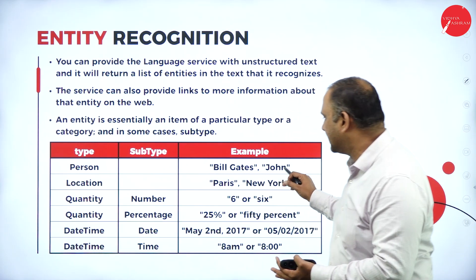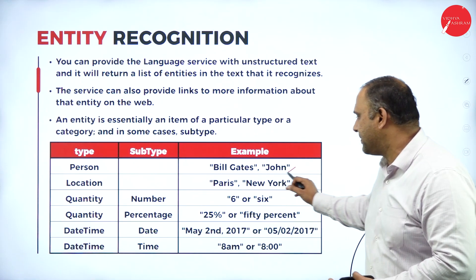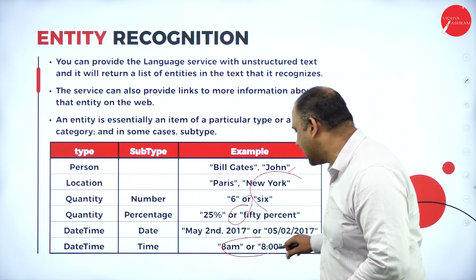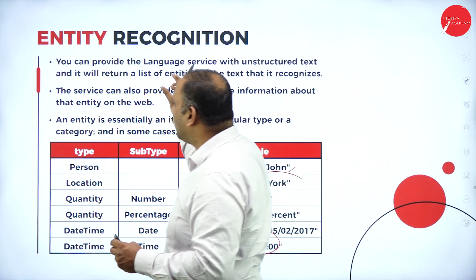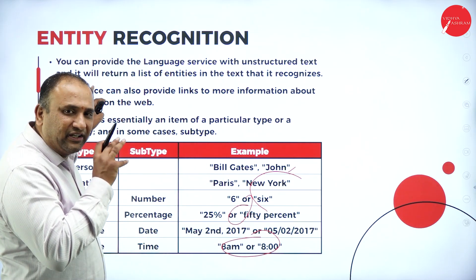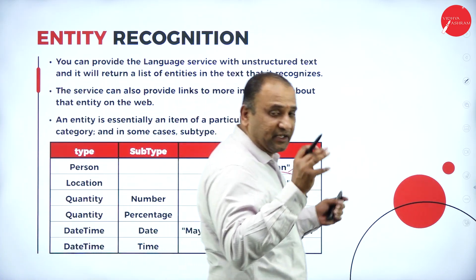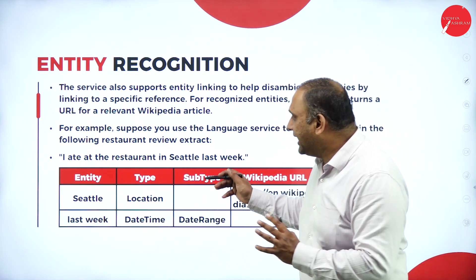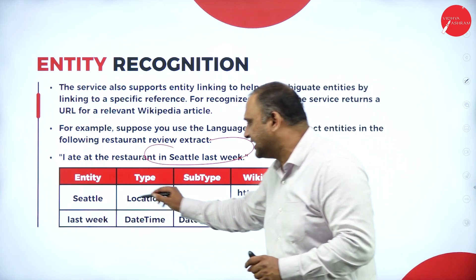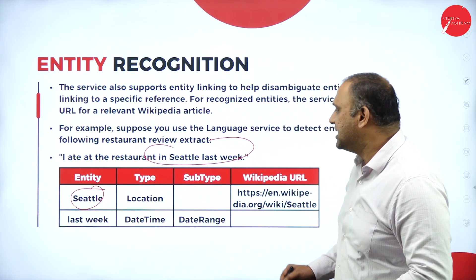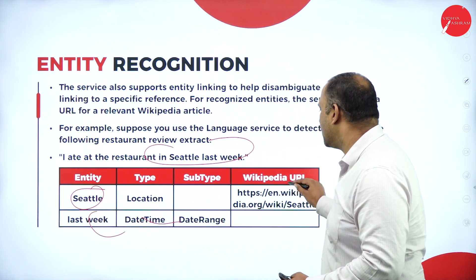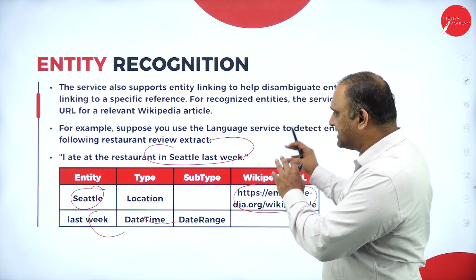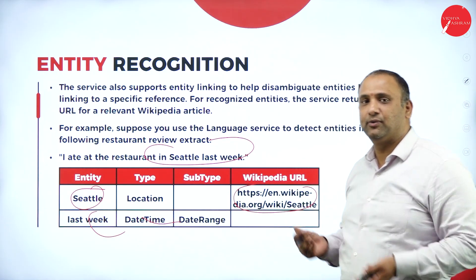Entity recognition identifies items such as: person (for example, Bill Gates, John), location (Paris, New York), quantity (a number or percentage), and date and time. These are key factors — an entity is essentially a particular type of item, and in some cases it may also have a subtype. For example: 'I ate at the restaurant in Seattle last week.' Seattle is an entity — a place located in the U.S. 'Last week' brings date and time into the picture. Automatically, when you put in that link and click on it, it takes you to that location, with a precise URL to make you understand the feeling.